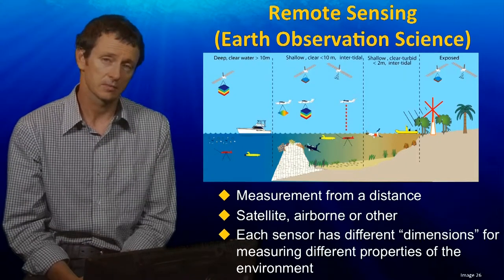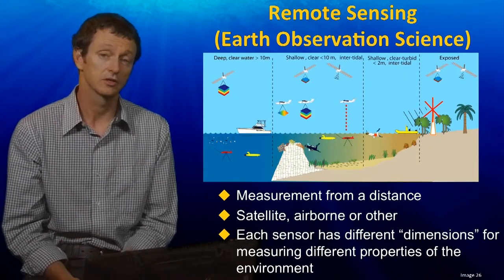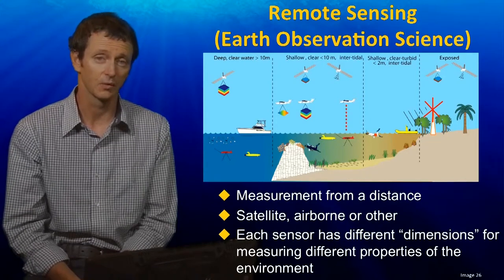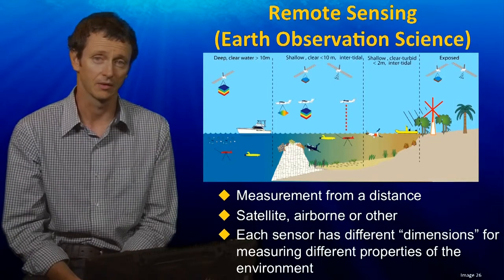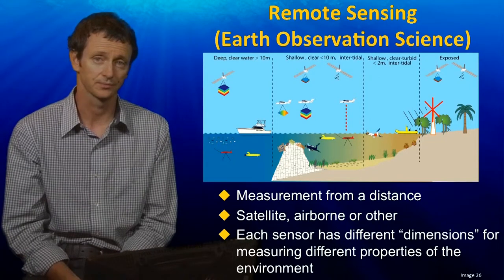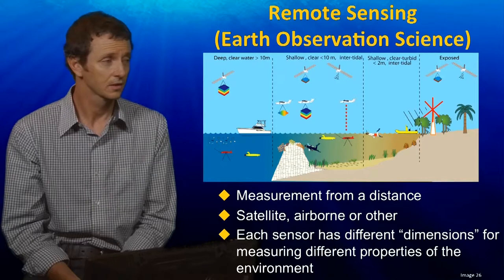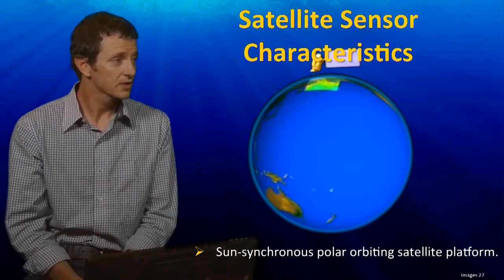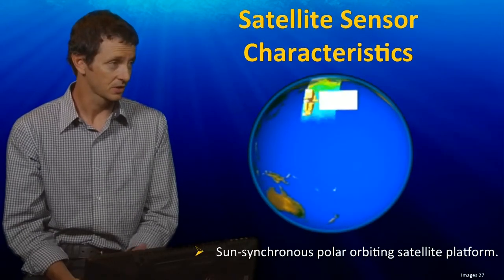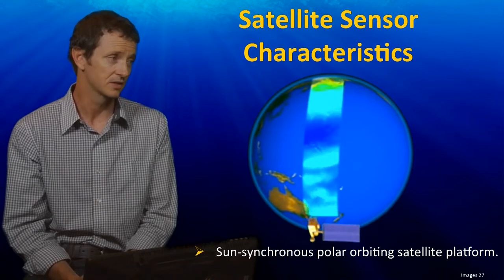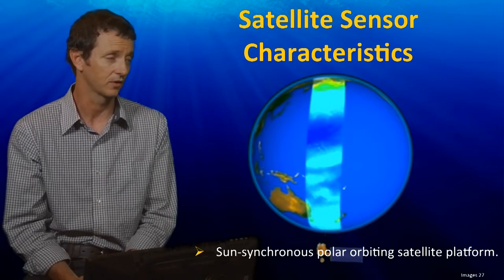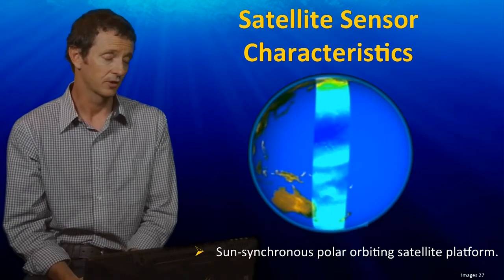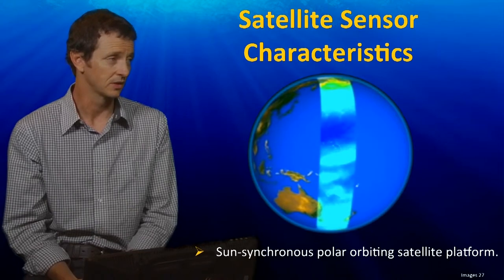Chris Rolfsner is then going to explain how those are actually transformed into maps of the environment for understanding what's there and how it's changing. One of the first controls on the type of information we get out of sensors is the height that they're flying at and how frequently they come back to acquire information.